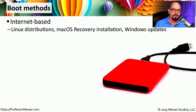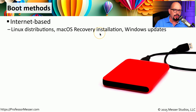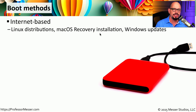Some systems can also boot and install the operating system across the Internet. A good example of this is a number of Linux distributions that are designed with a minimal download to get things started and then download any other code needed from the Internet. Mac OS has a recovery installation built into the BIOS that will go out to the Internet and download versions of Mac OS to install. Windows Update also provides a way to install operating systems directly from an Internet source.